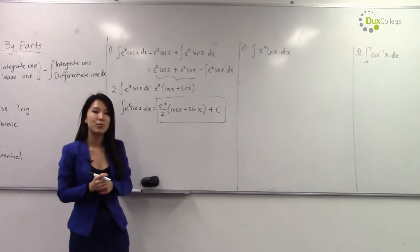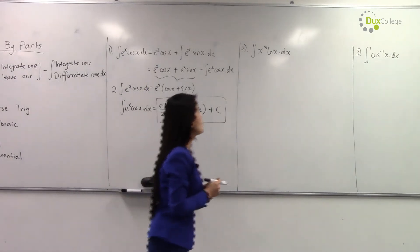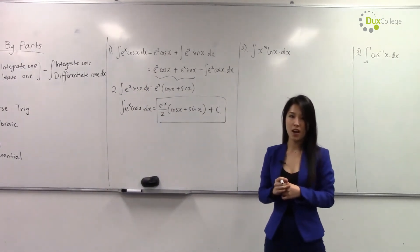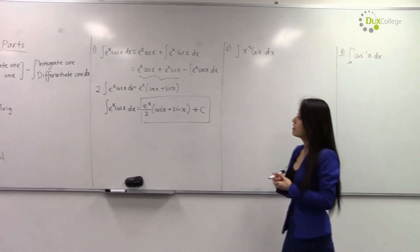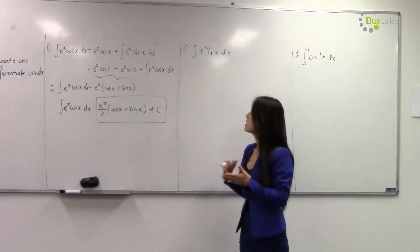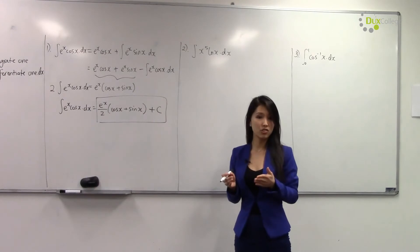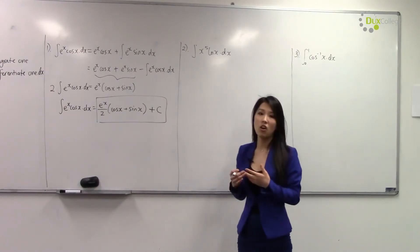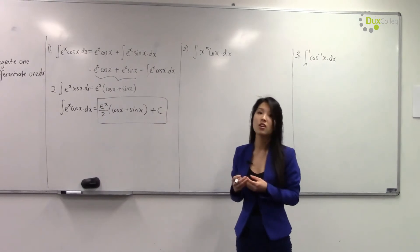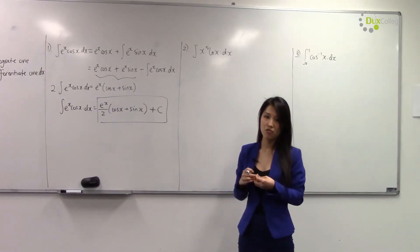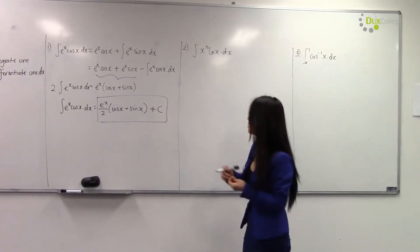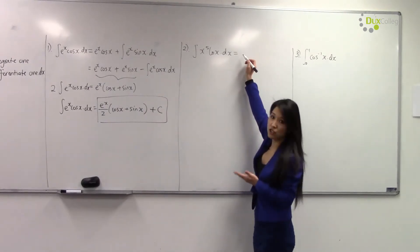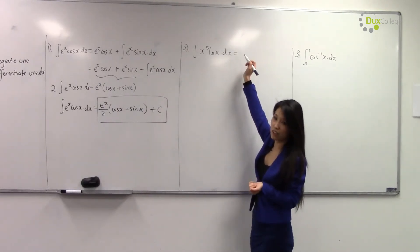Now let's look at example number two. In example number two, we have to integrate x^5 multiplied by log(x). Again, following LIATE, this time we have an algebraic function combined with a log function. So we would prefer to integrate algebraic rather than log. So we integrate one, leave one — integrate x^5.